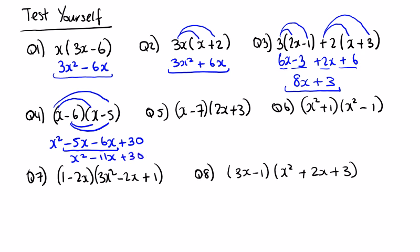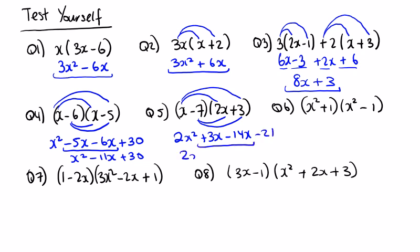X by 2x, x by 3, minus 7 by 2x, minus 7 by 3: 2x squared; x by 3 is 3x; minus 7 by 2x is minus 14x; and minus 7 by plus 3 is minus 21. So we have 2x squared, and minus 14 plus 3 is minus 11x, minus 21.